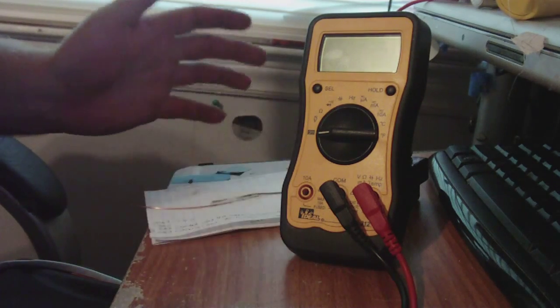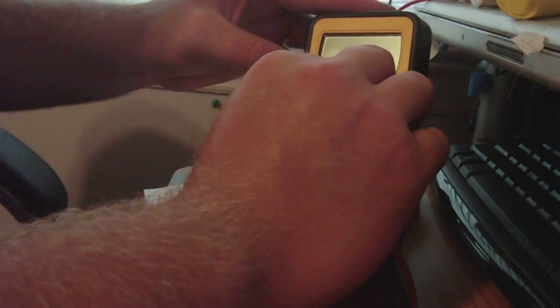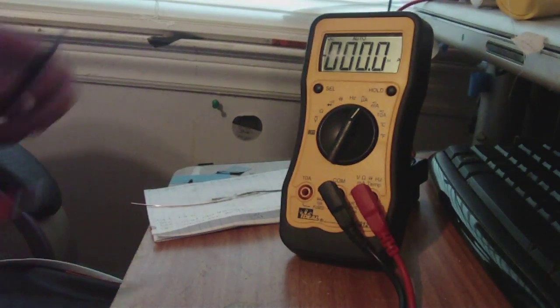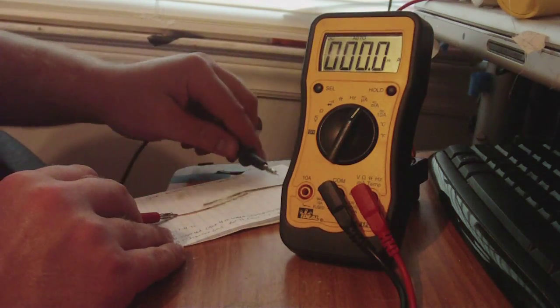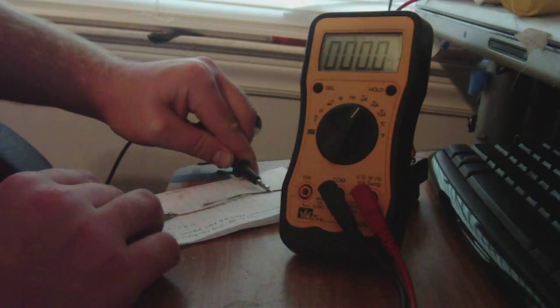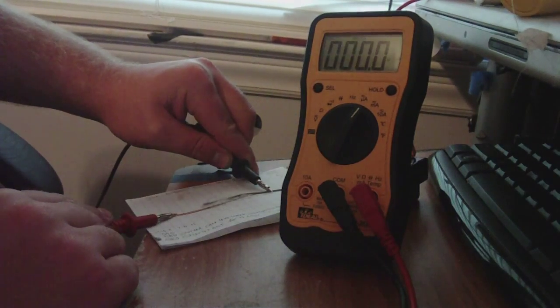With this cell, my meter cannot pick up any amperage reading. I'm going to put it on the microamps, and you can see, nothing.